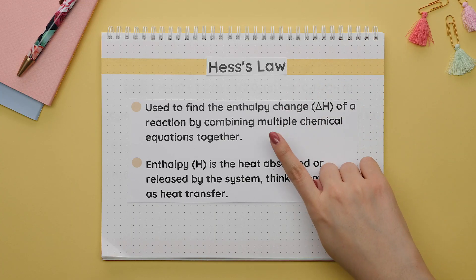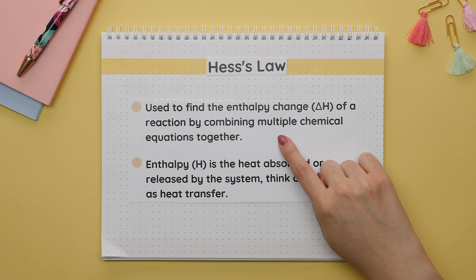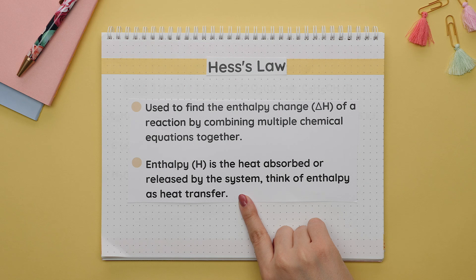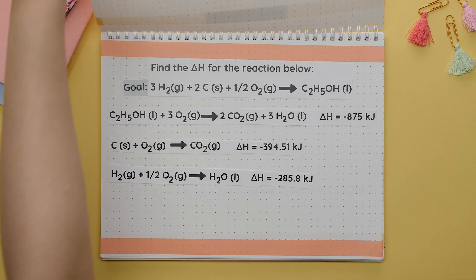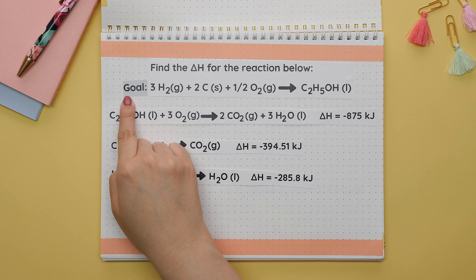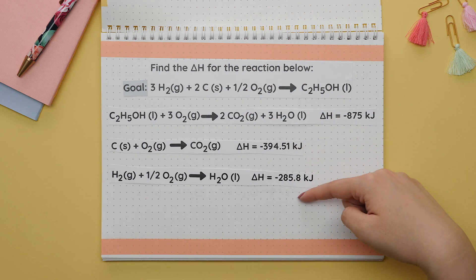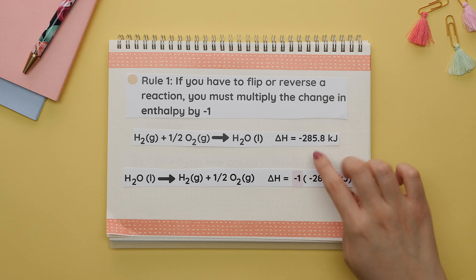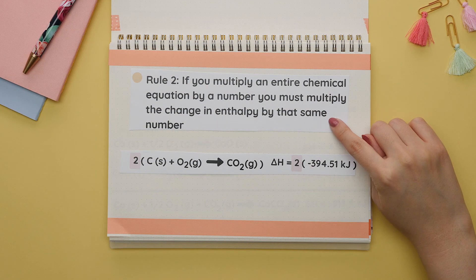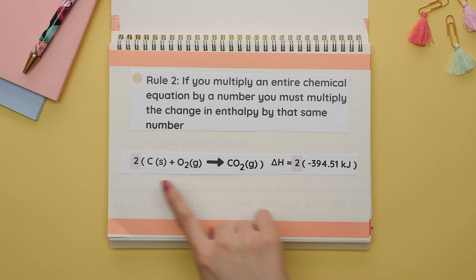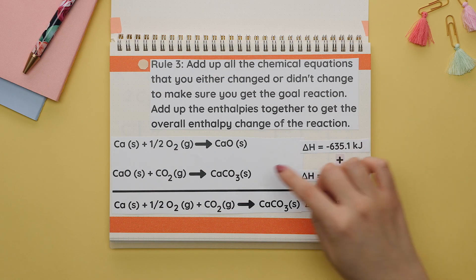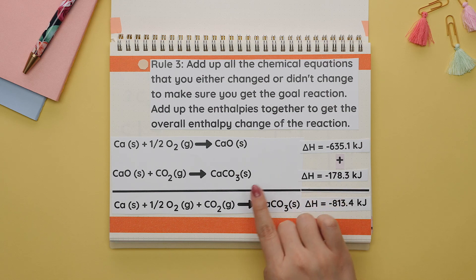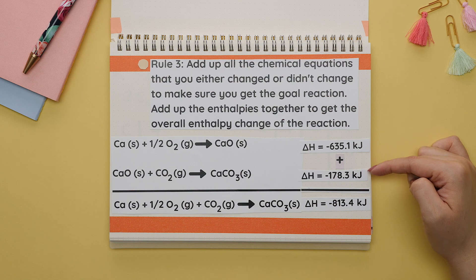Knowing how to add and subtract fractions will be useful specifically for Hess's law. Hess's law is used to find the change in enthalpy of a reaction by combining multiple chemical equations. Enthalpy is the heat absorbed or released by the system — think of it as heat transfer. In a Hess's law question there is always a goal reaction that you manipulate the given equations to match. Three rules: Rule 1 — if you flip a reaction, multiply the enthalpy change by negative one. Rule 2 — if you multiply an equation by a number, multiply the enthalpy by that same number. Rule 3 — add all modified equations to reproduce the goal reaction and sum the enthalpies for the overall change.